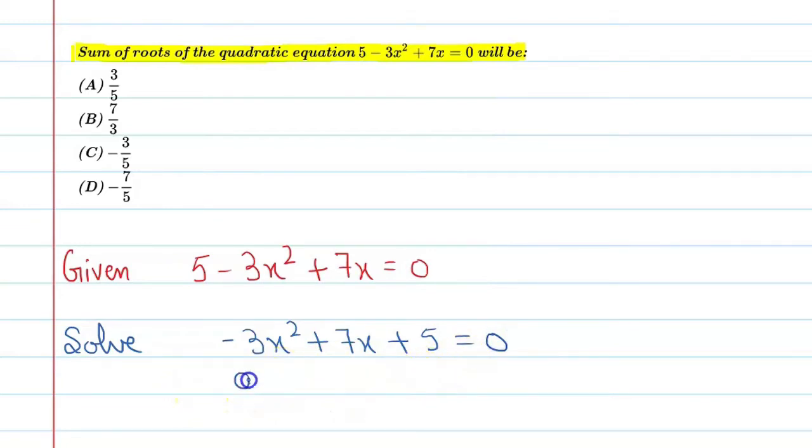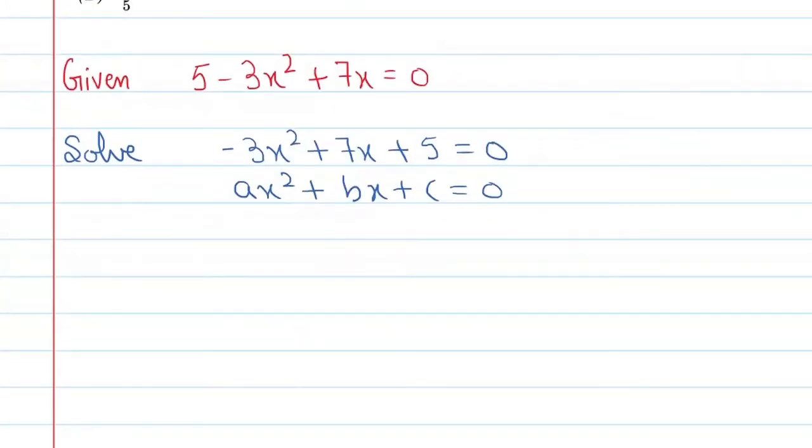Now compare this equation with the standard form of quadratic equation which is ax² + bx + c = 0. From this comparison, you can say that value of a is -3, value of b is 7, and value of c is 5.